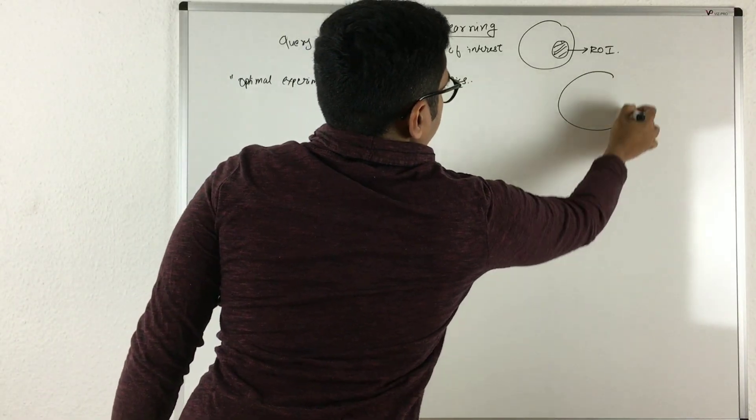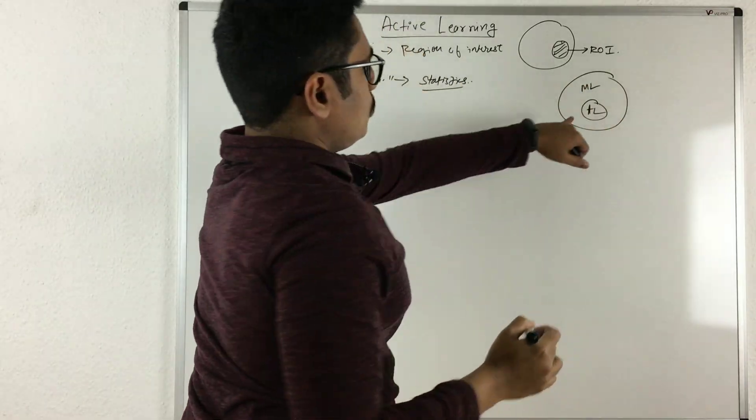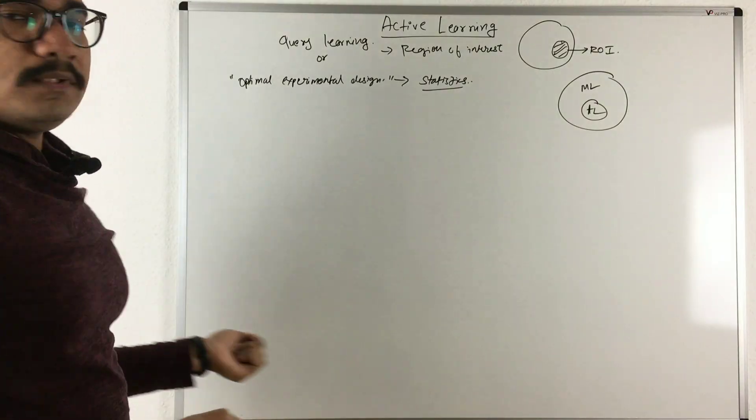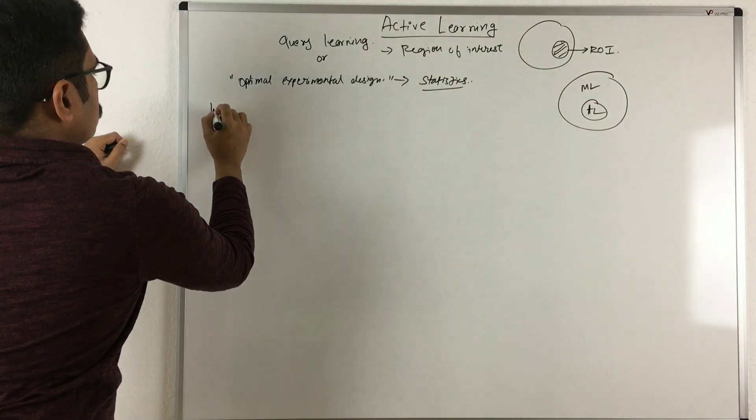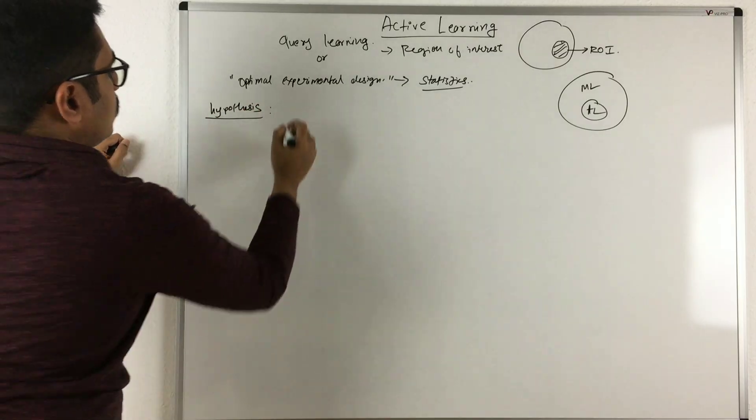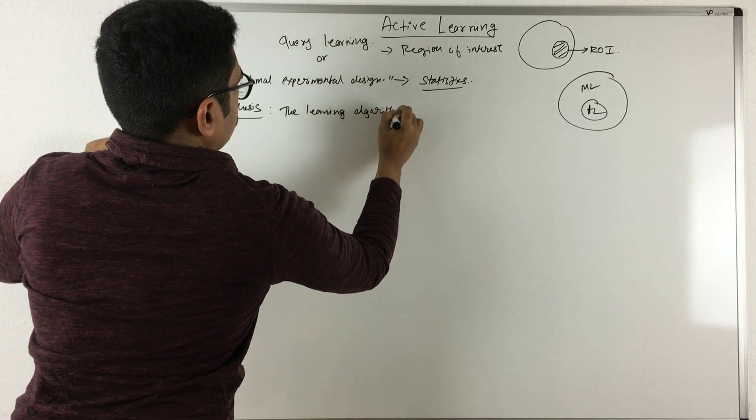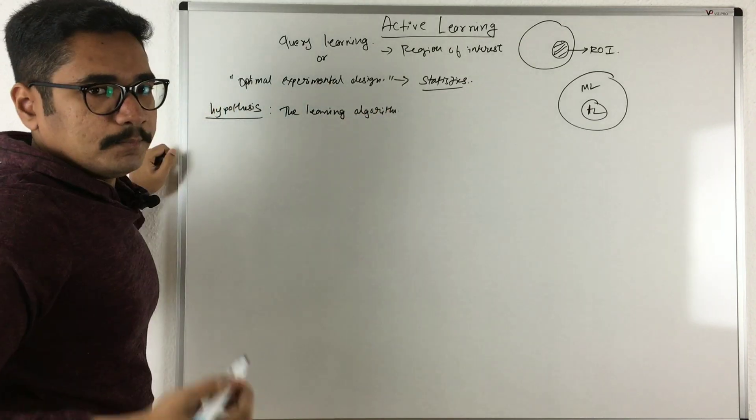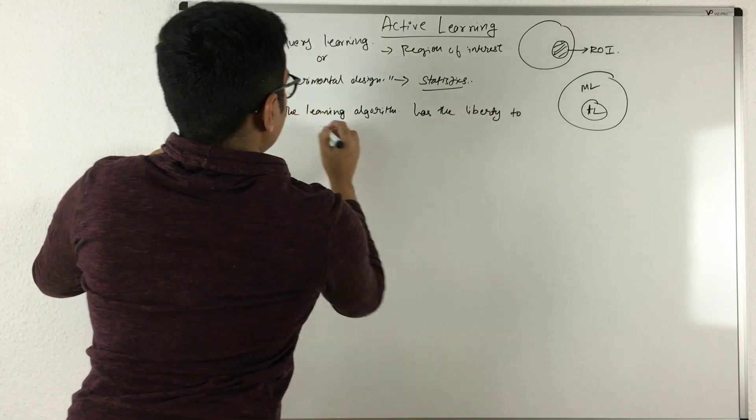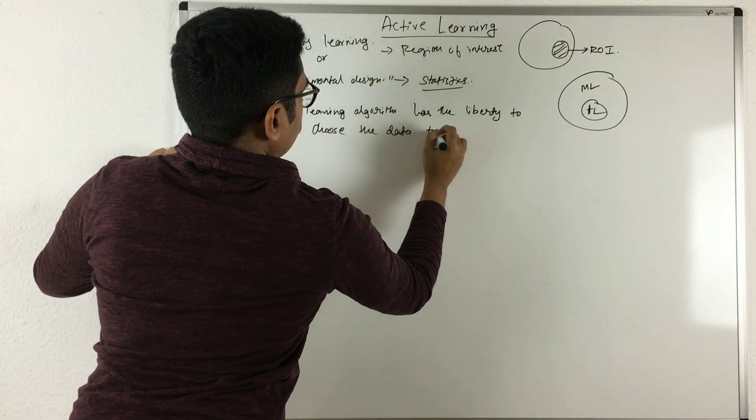As I told you, active learning is just a branch, or moreover like a subset, of machine learning. There is a key hypothesis in this. The hypothesis which is followed in active learning is that the learning algorithm, that is a machine learning algorithm which you are implementing, has the liberty to choose the data to learn from.